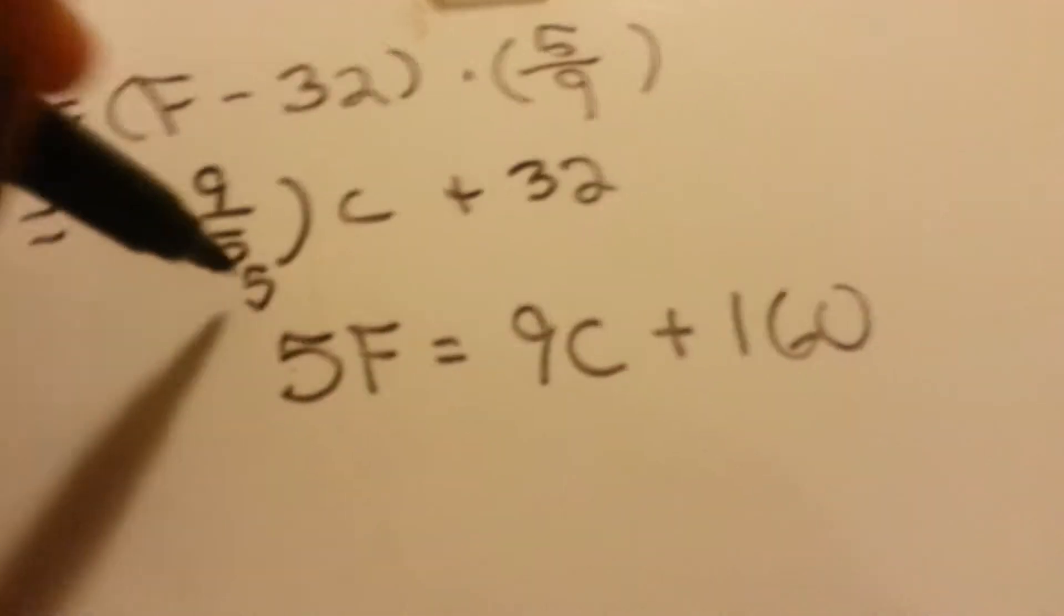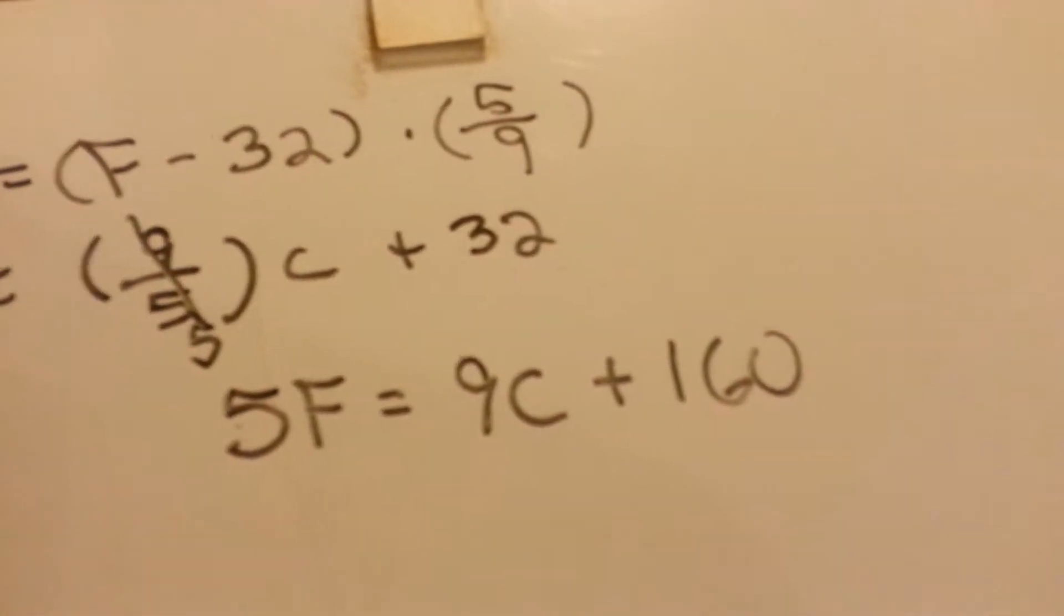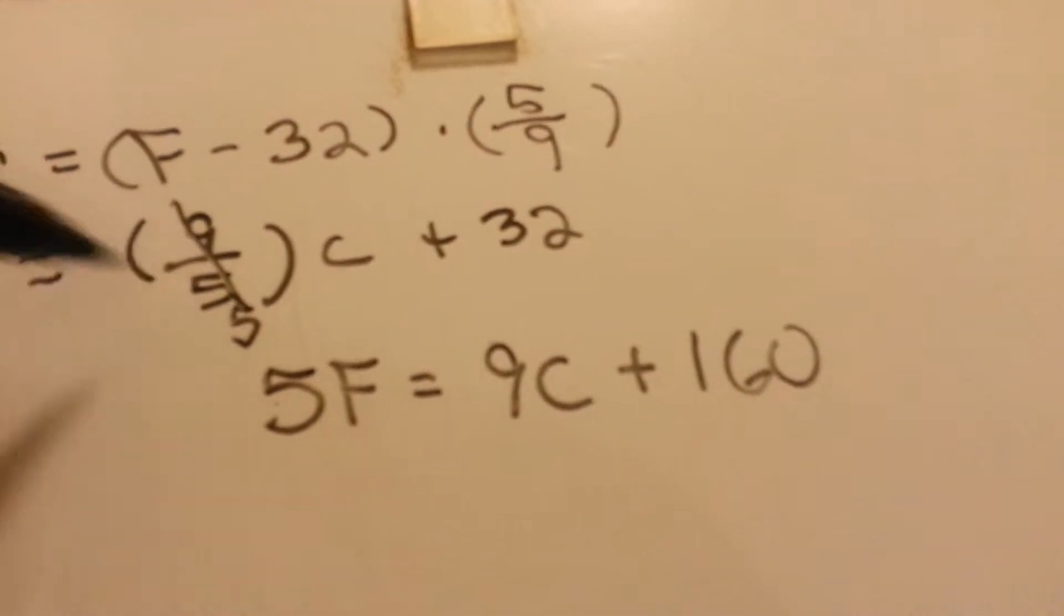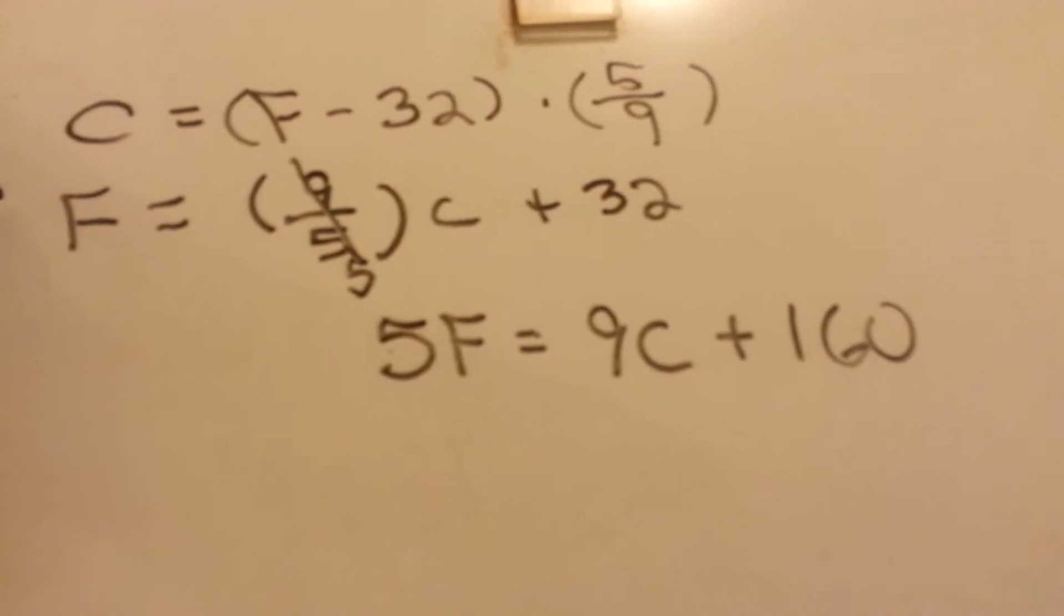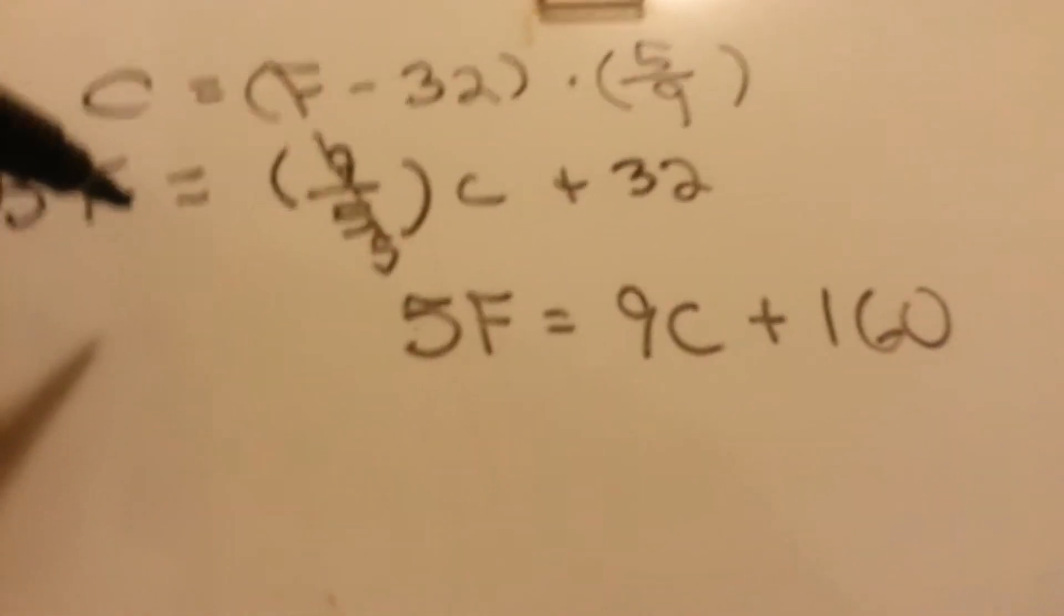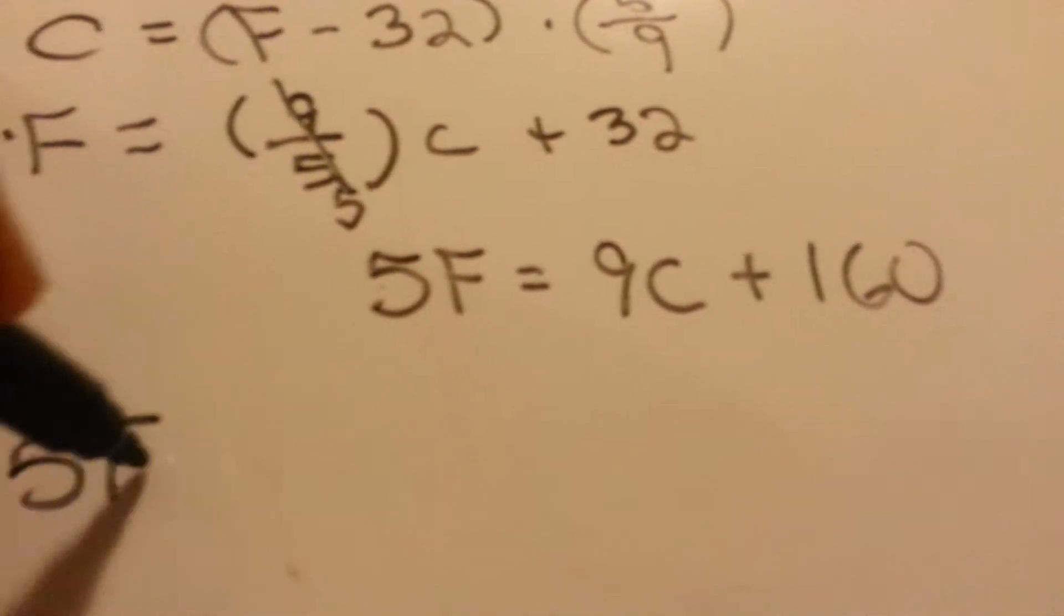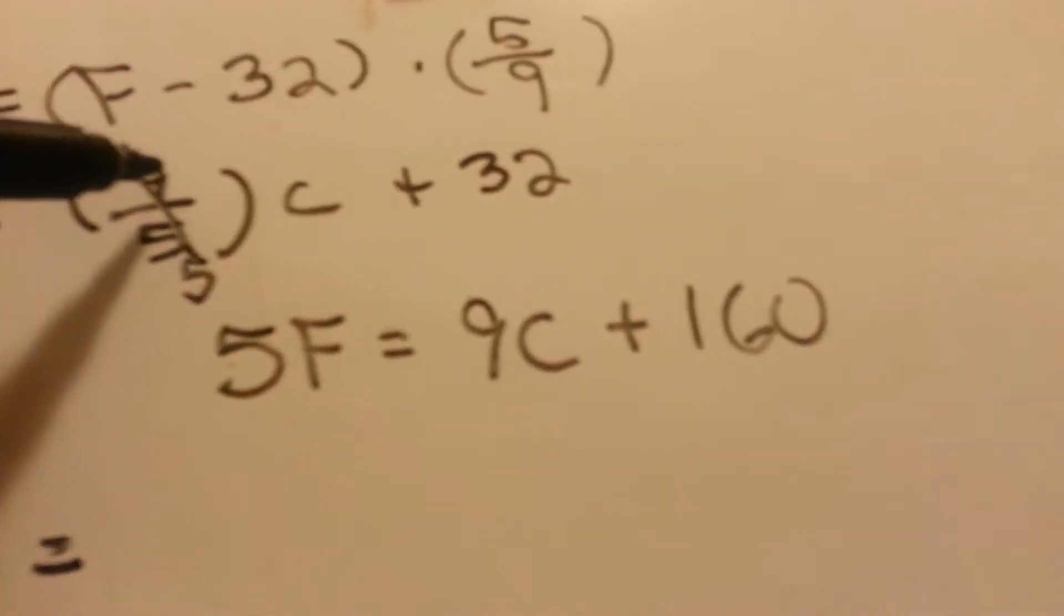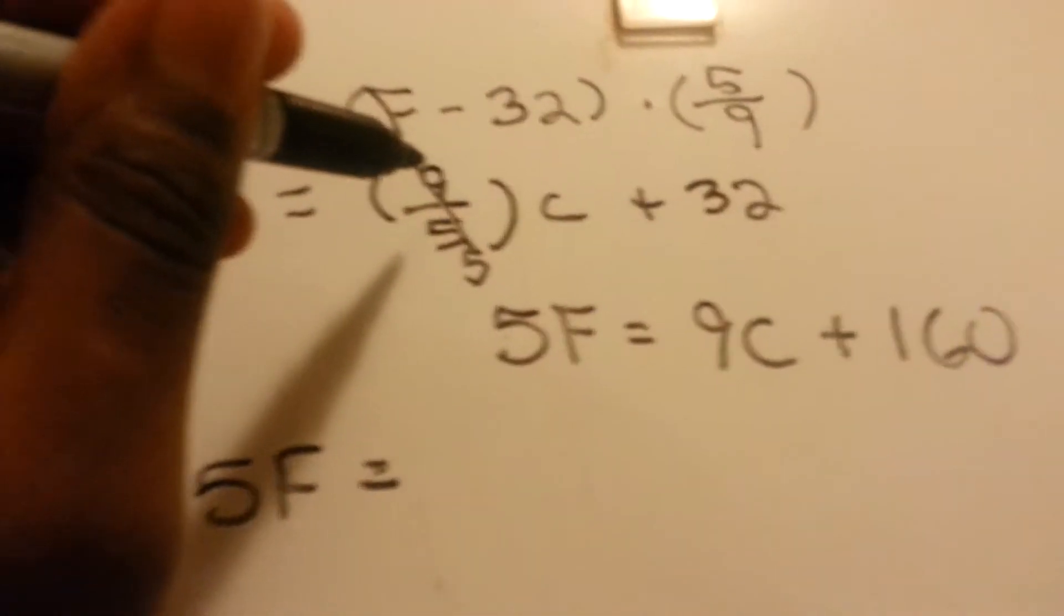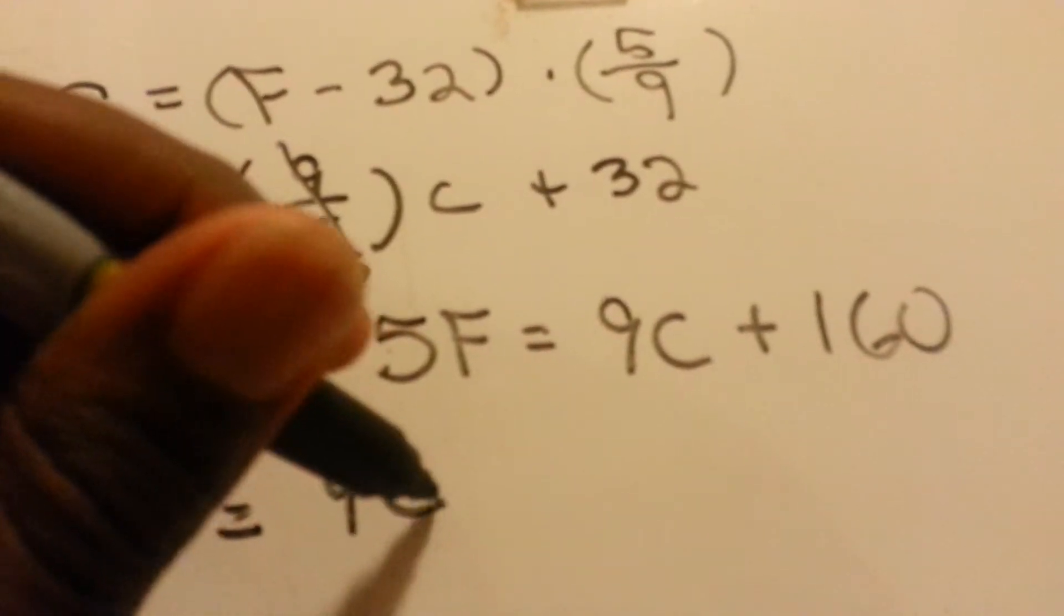So you do multiply by 5, cross it off here, and then you would have to multiply, what you do to one side, you have to do to the other side. So you have to multiply F by 5 and then that would give you 5F equals, you have to multiply that 9 by C. So 9C,